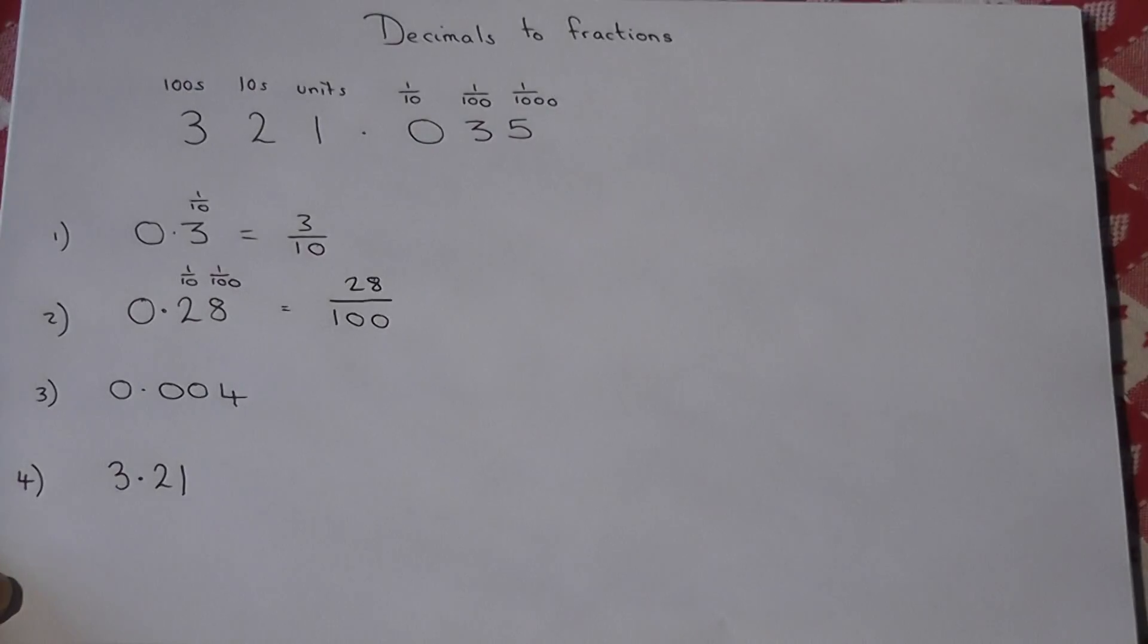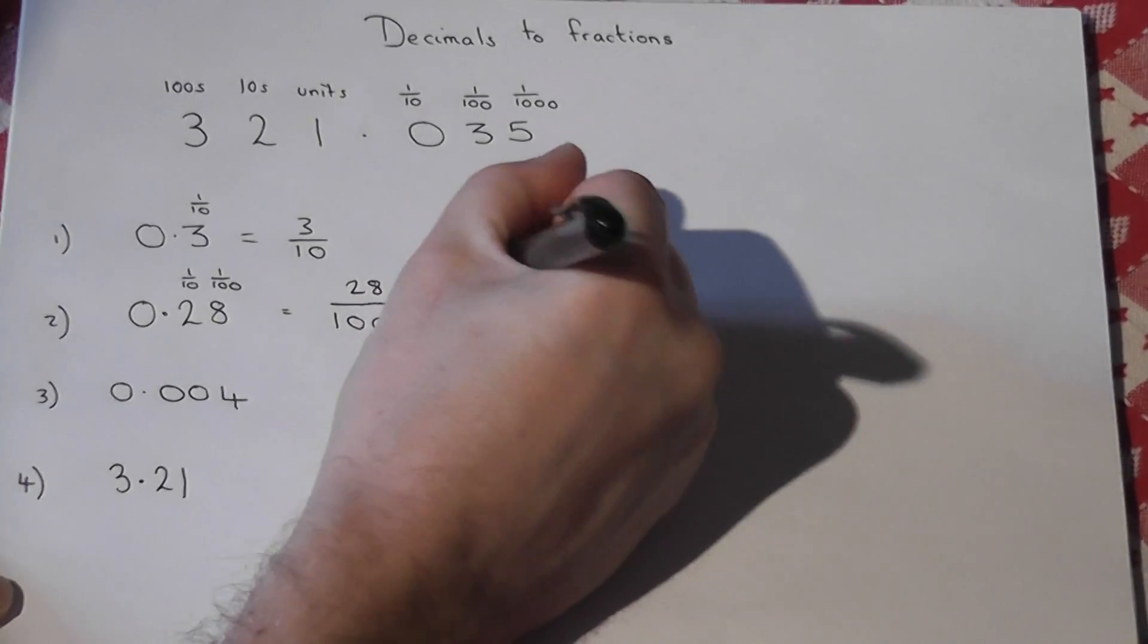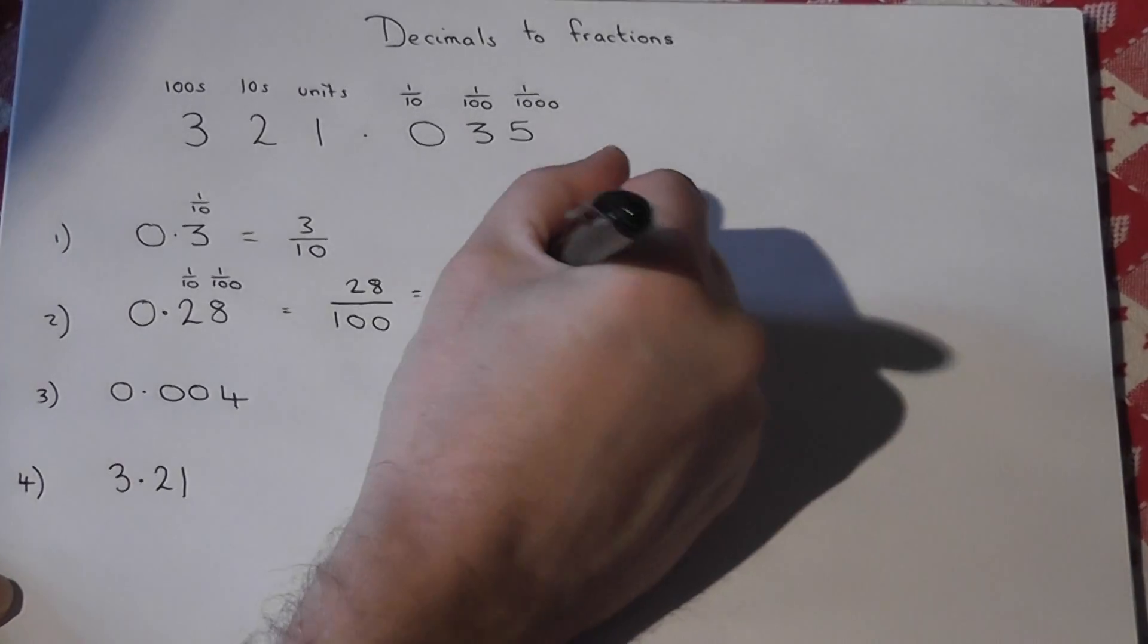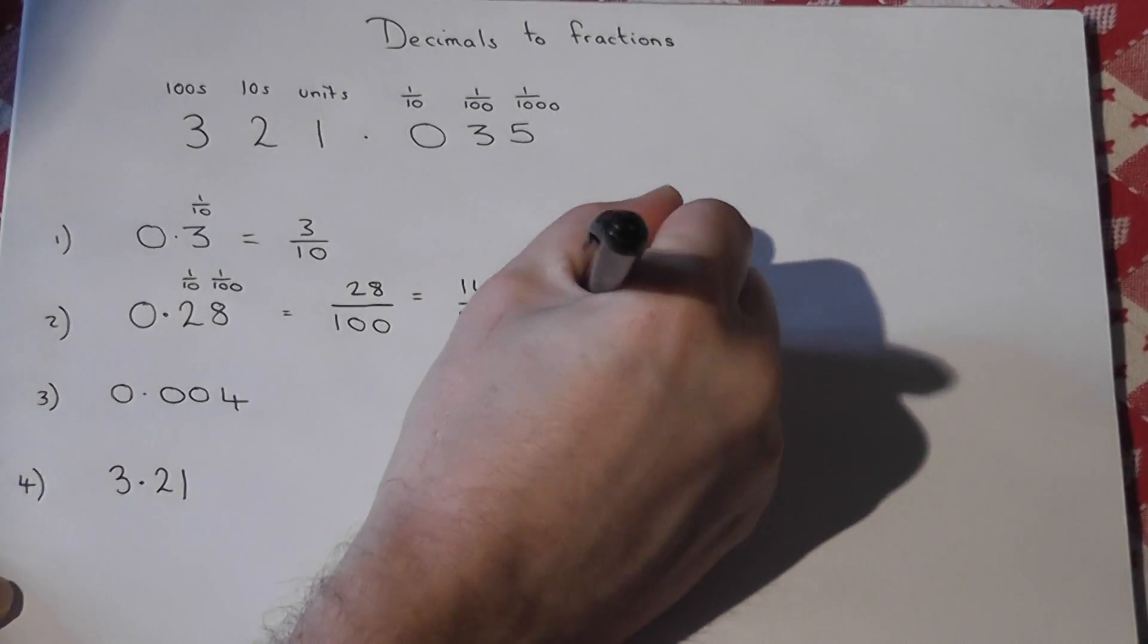And all you do is you say it is 28 hundredths. Now this also cancels down. We can divide it by two. So that's fourteen-fiftieths, and I can divide by two again, that's seven over twenty-five.